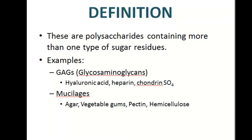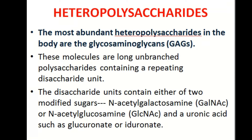By definition, heteropolysaccharides are polysaccharides in which different types of sugar residues are joined. They are unbranched polysaccharides with repeating disaccharide units. These disaccharide units consist of two types of modified sugars: either N-acetyl galactosamine or N-acetyl glucosamine, along with a uronic acid such as glucuronate or iduronate.